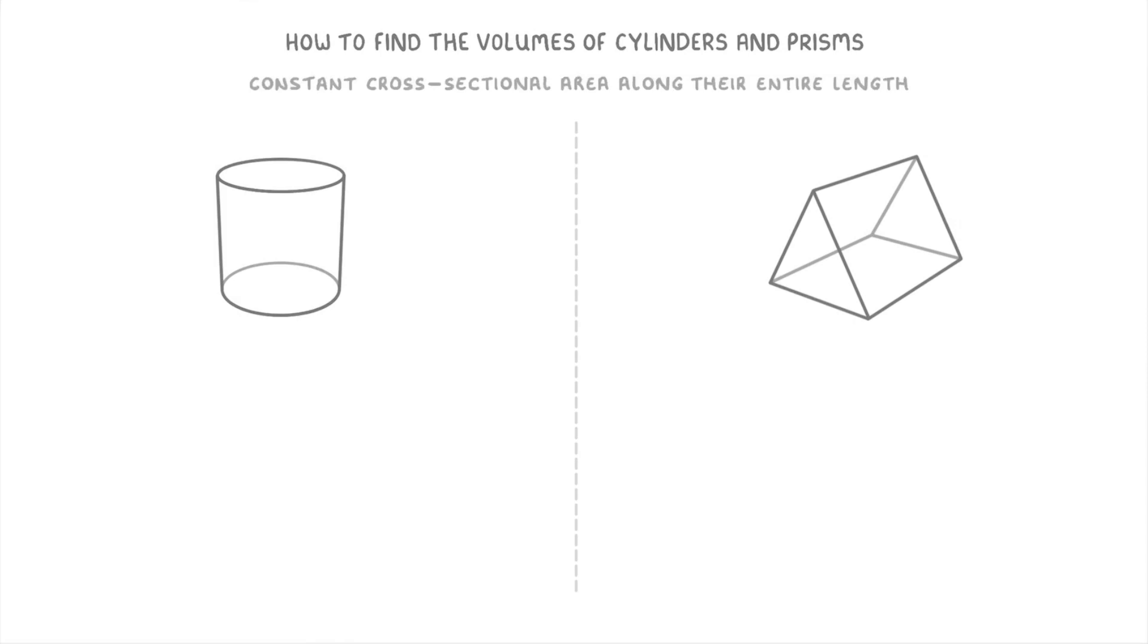For example, the cylinder has the same circular area here at the bottom, at the middle, and at the top, while the triangular prism has the same triangular area at the front, the middle, and the back.